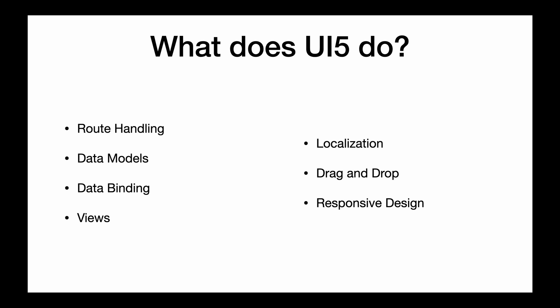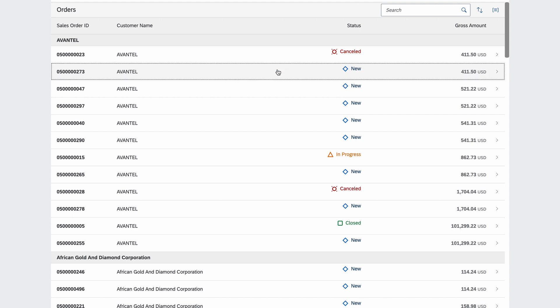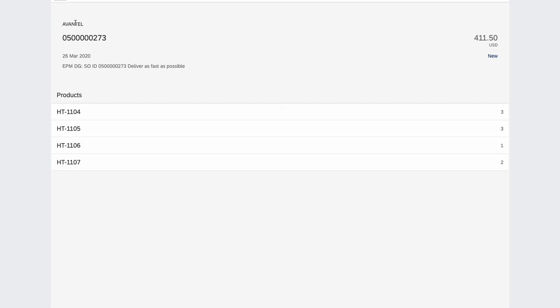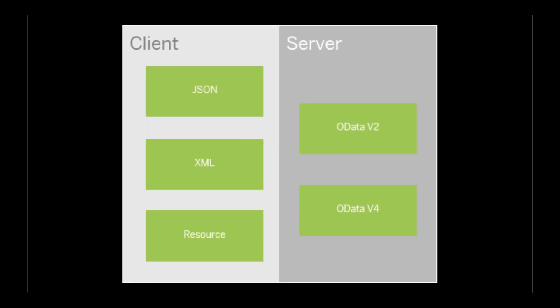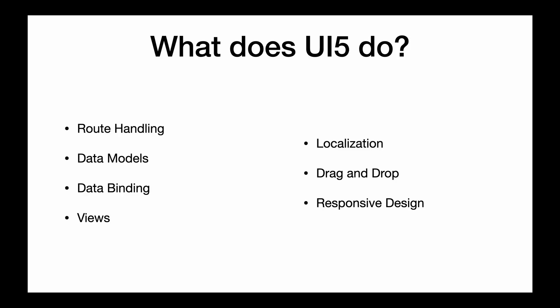So why are we using SAPUI5? What benefit do we get from using it instead of plain vanilla JavaScript or HTML? First, it provides route handling, which enables us to create basic to complex navigation from one page to another, and we can also pass parameters using route handlers. Next is data models — it provides a layer of abstraction on basic data operations like create, read, update, and delete, including OData, JSON, and XML models. UI5 also allows easy data binding, so you can update your data dynamically without creating each and every function for getting and setting data.